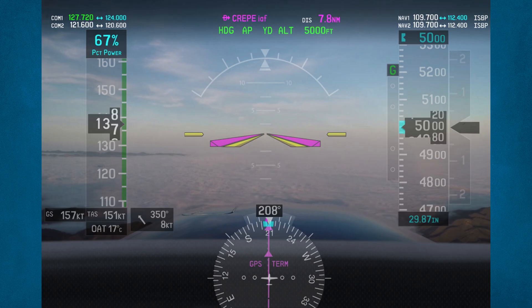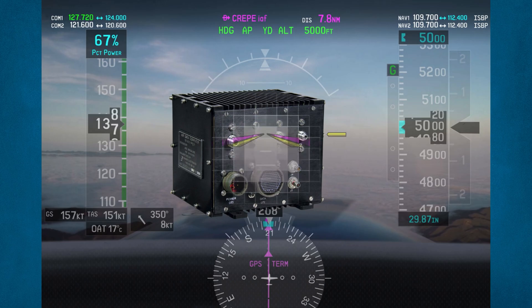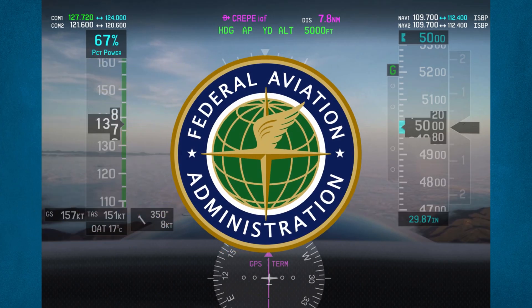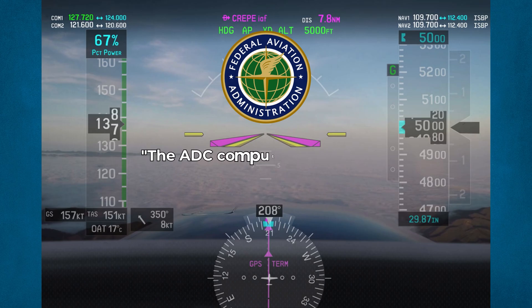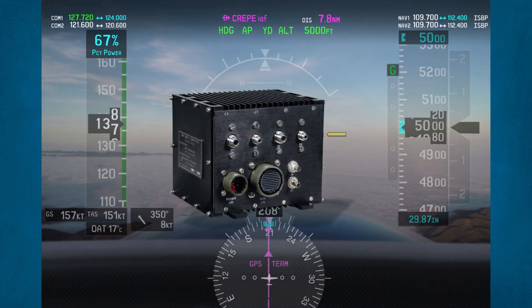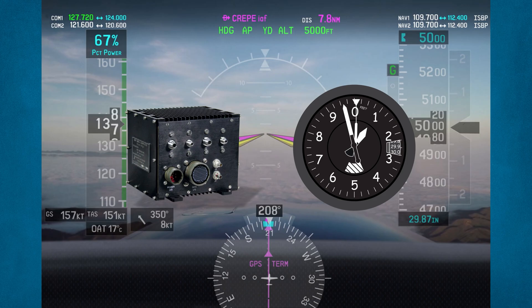Electronic flight displays do things a little differently. Altimeter readings are generated by an air data computer, which uses the same static air input to measure altitude. However, the static air never enters a diaphragm the same way it does in a traditional altimeter. The FAA defines an air data computer as: the ADC computes the received barometric pressure and sends a digital signal to the PFD to display the proper altitude readout. The air data computer uses the same basic concept as a traditional altimeter, but with fewer moving parts.